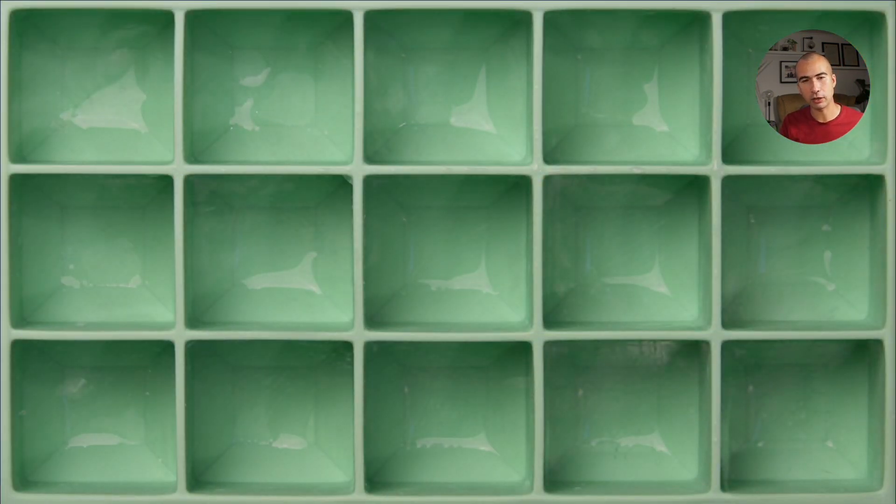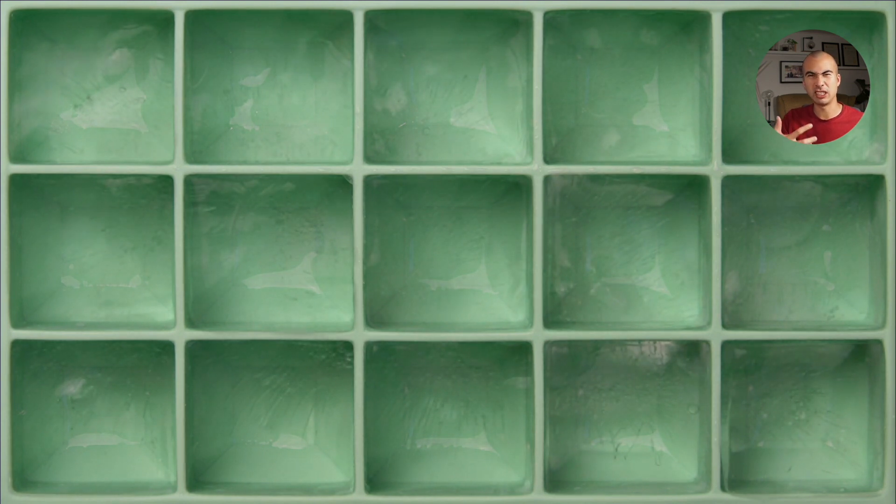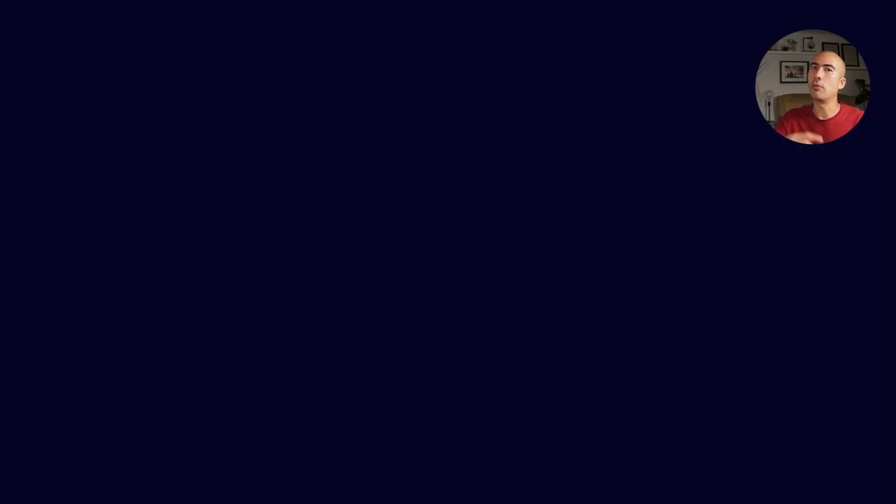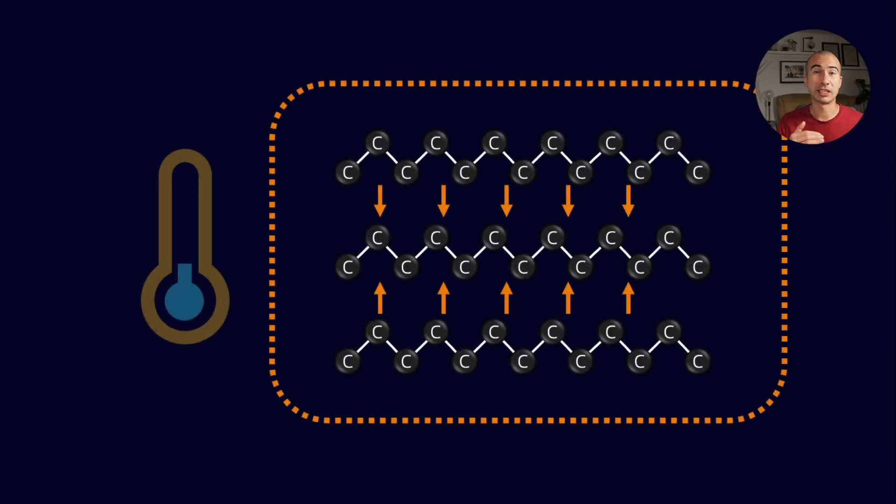Now we said in a previous video that unlike water, which crystallizes basically at a uniform temperature, we've got to remember that lubricants are made out of a whole bunch of different kinds of molecules, some of which are paraffins.